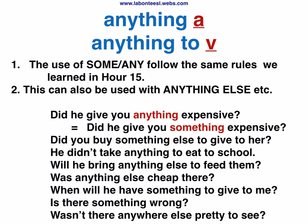Pattern: Anything verb / anything to verb. The use of SOME and ANY follows the same rules learned in Hour 15. This can also be used with 'anything else.' Did he give you anything expensive? Did he give you something expensive? Did you buy something else to give to her? He didn't take anything to eat to school.